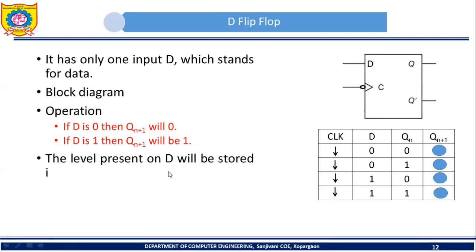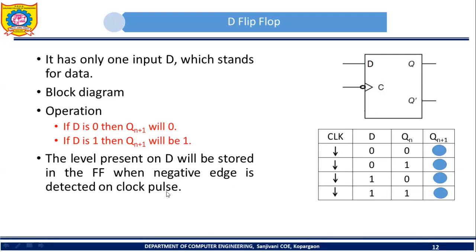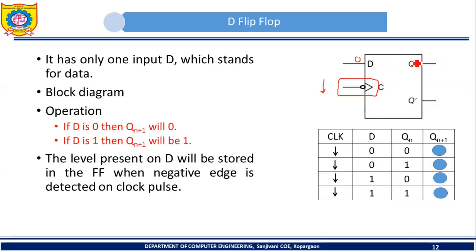The level present on D will be stored in the flip-flop when a negative edge is detected on the clock pulse. This means that if you apply input 0 to the D flip-flop, the output is not going to change immediately. The D flip-flop will wait for the negative edge, and whenever a negative edge is detected on the clock pulse, the output will change according to the input.